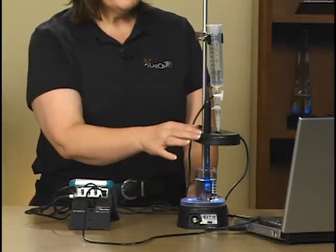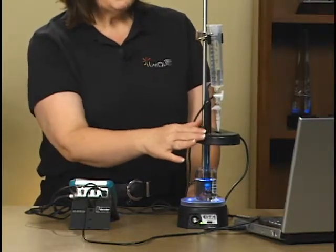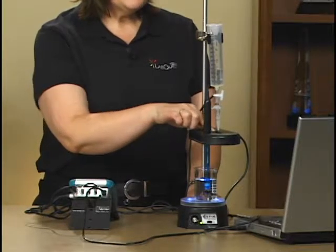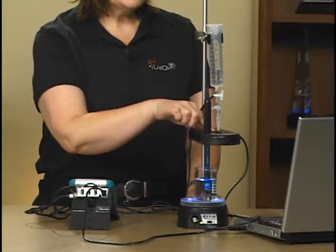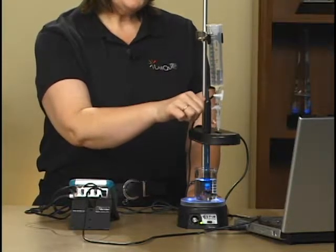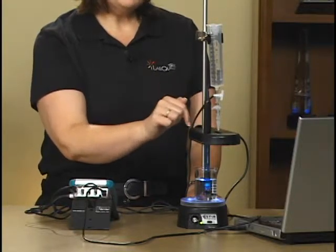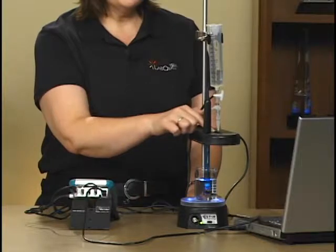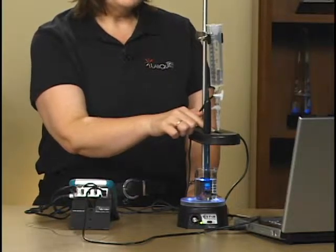The drop counter itself is made of two pieces. This part is the part that actually counts the drops. An infrared beam of light goes through this little slot on the top, and as the reagent reservoir here drops drops through the slot, they will break the beam and count each drop. The software will then convert those drops into volume in milliliters.